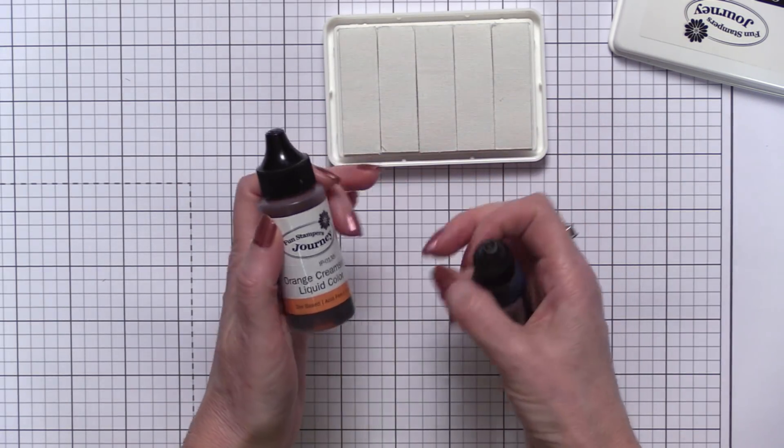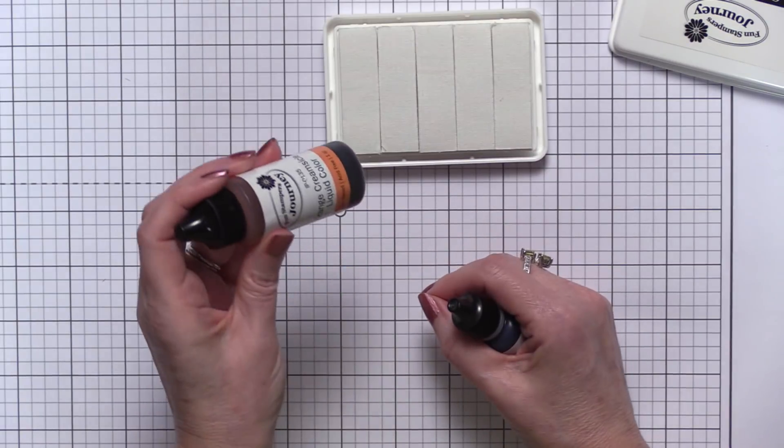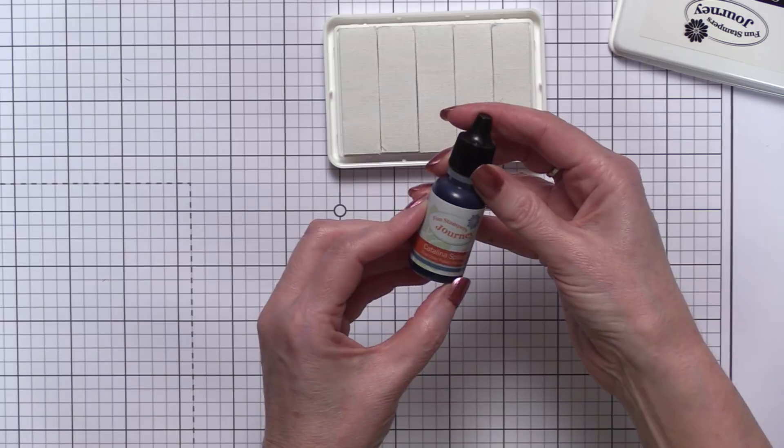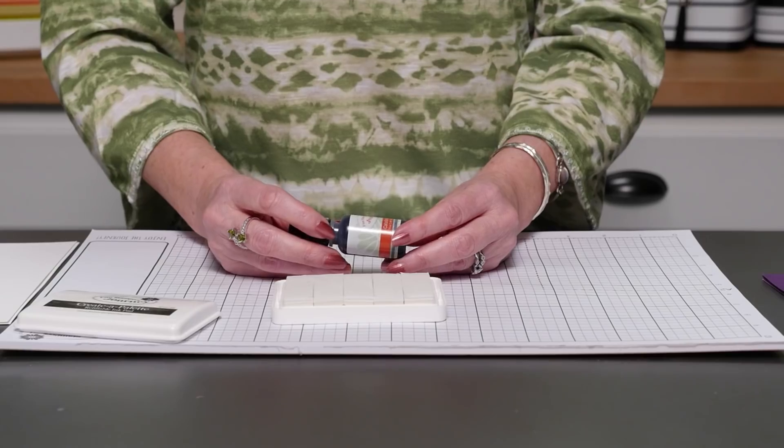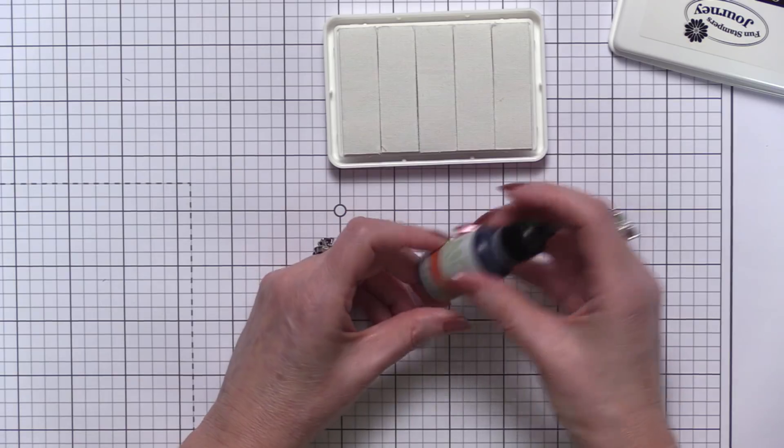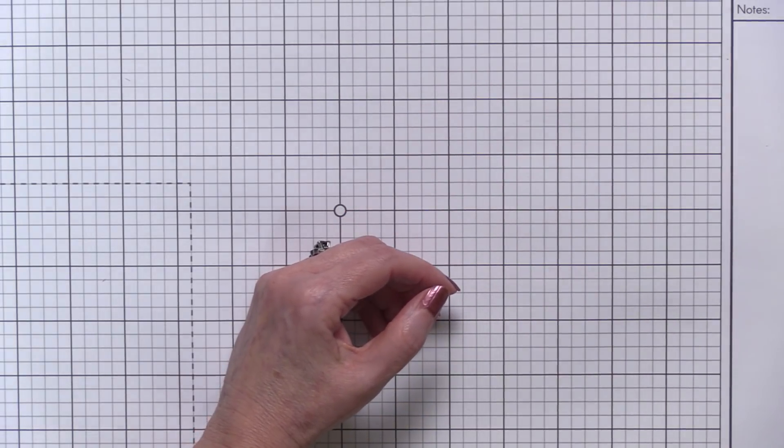So our liquid colors are dye-based, meaning they are water-based, and our reinkers are our fusion blend, which is a fusion of water-based and pigment ink.